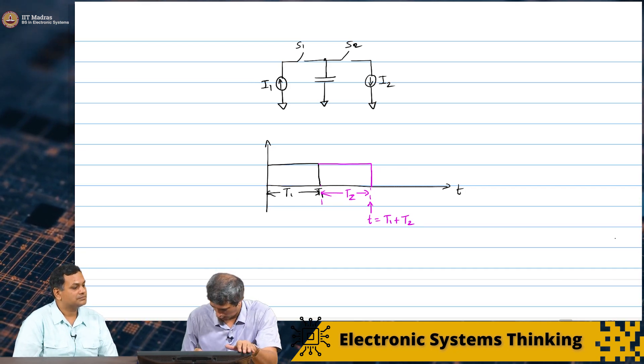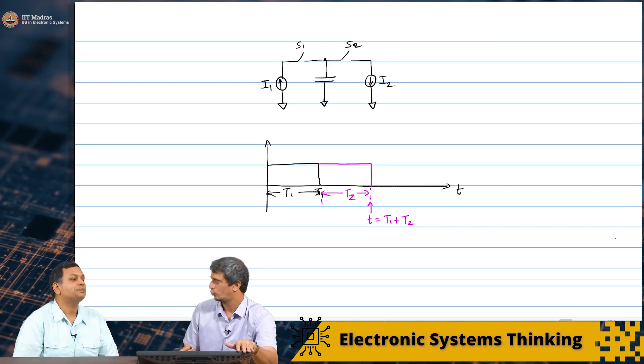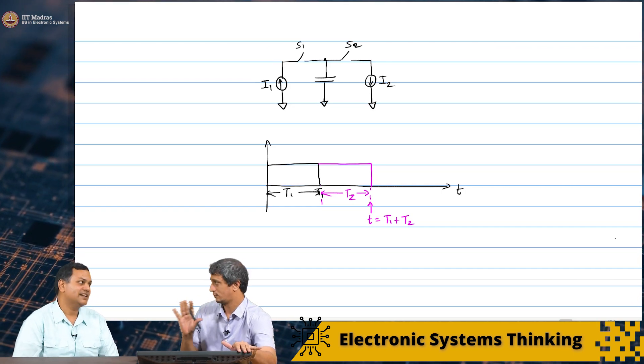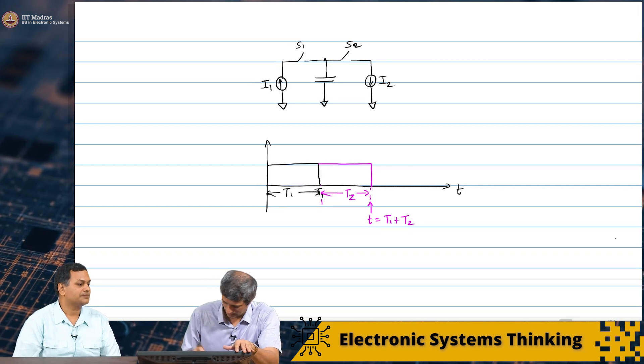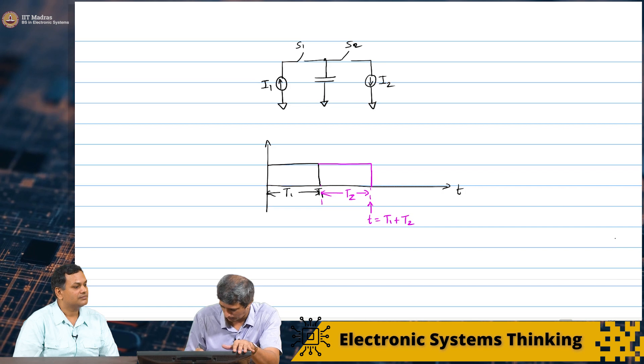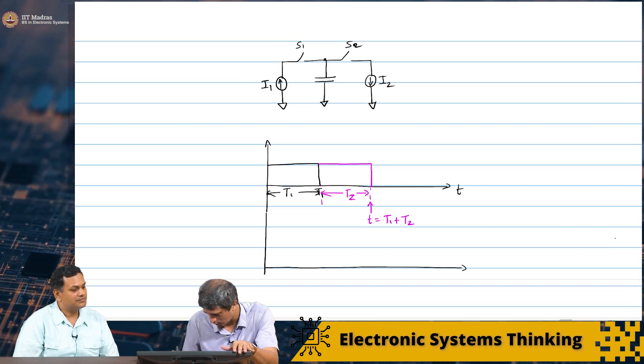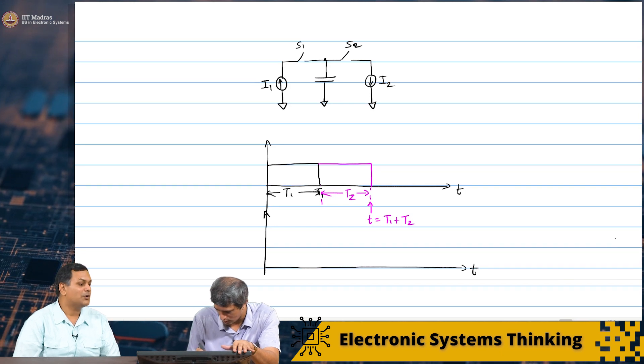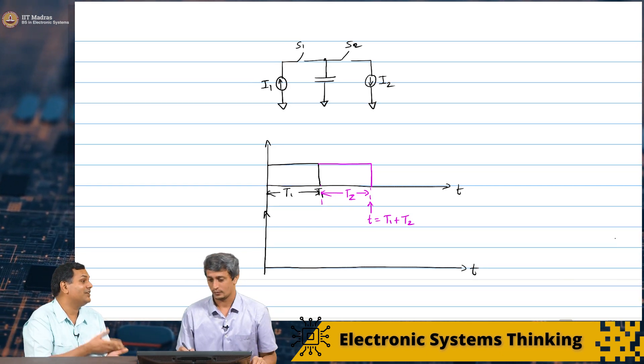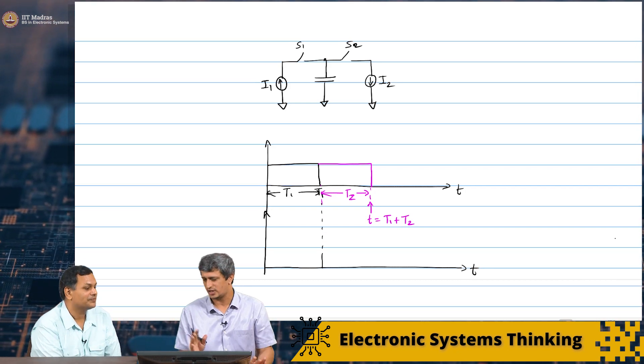What I want to now do is I want to first of all figure out the timing of T2 so that we do not go below zero. But, let us first of all plot the output voltage. Because that is very straightforward to do. And we also know the boundary conditions because it starts from zero and ends in zero at the end of T1 plus T2. Capacitor is initially discharged.